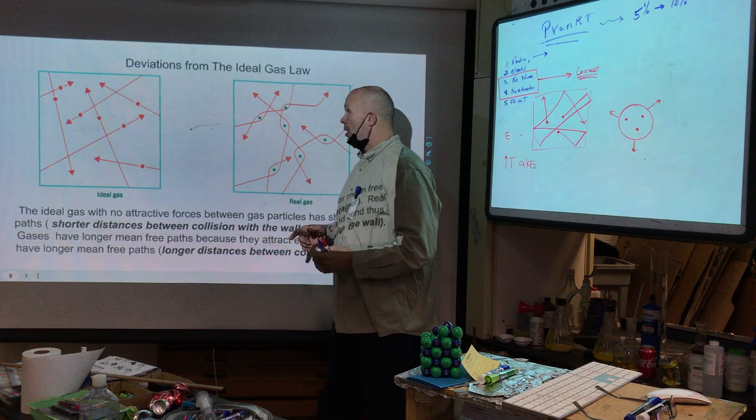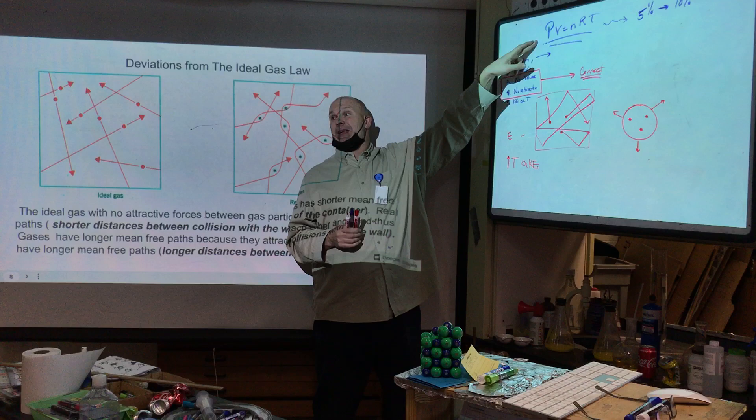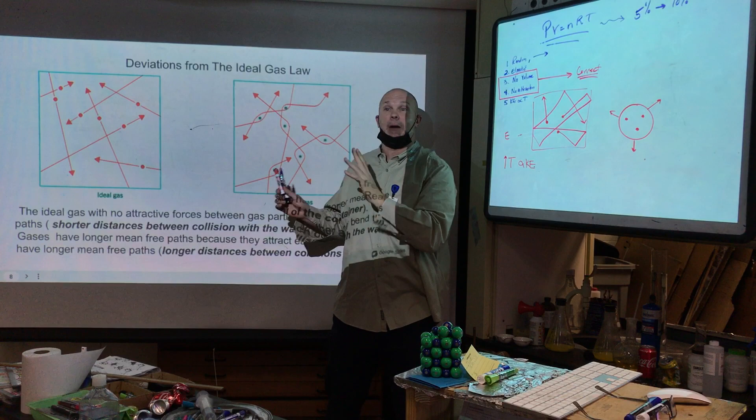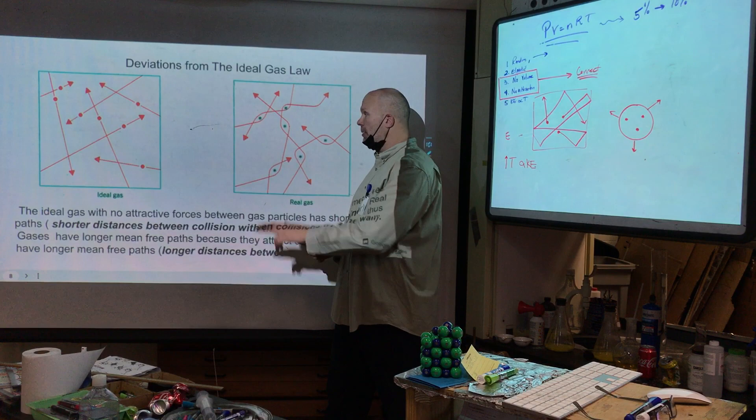That's the one key problem — pressure is elevated by the ideal formula compared to what actually exists because of attractive forces. Now, if some gases are more ideal — lighter, faster, like helium — this deviation will be smaller. It's important you realize that.